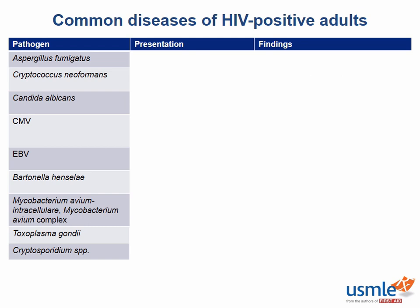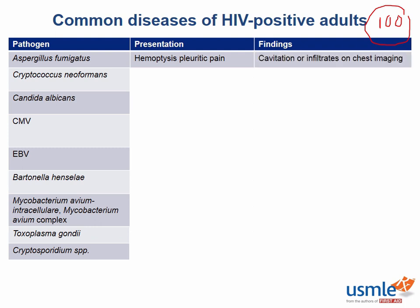Once our patient gets to having only 100 CD4 cells per millimeter cubed, things start to really get ugly. Patients can experience diseases caused by several organisms — most of them are fungi, some viruses, and one mycobacteria. Aspergillus is a fungus that likes to infect the lungs, making big cavities and causing hemoptysis as well as pleuritic chest pain. The key finding is cavitation or infiltrates on chest imaging.